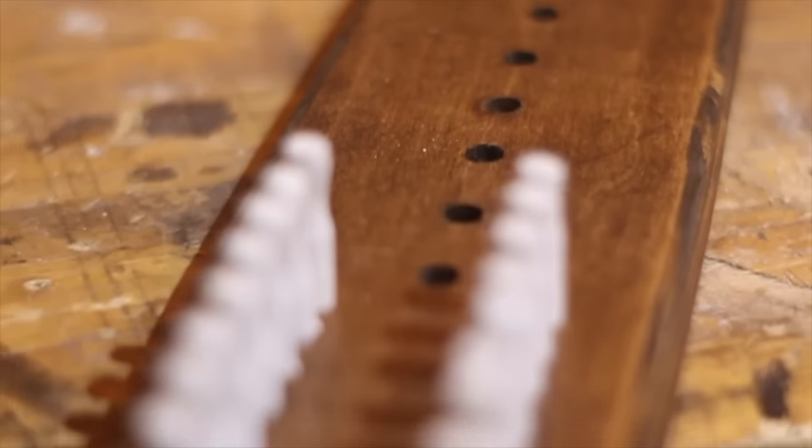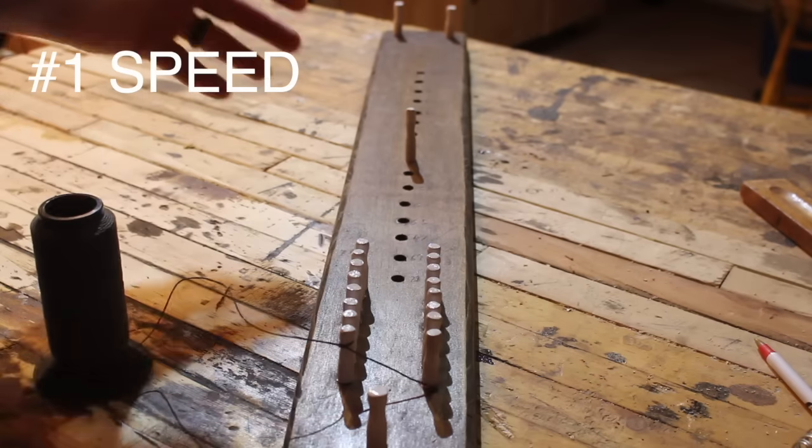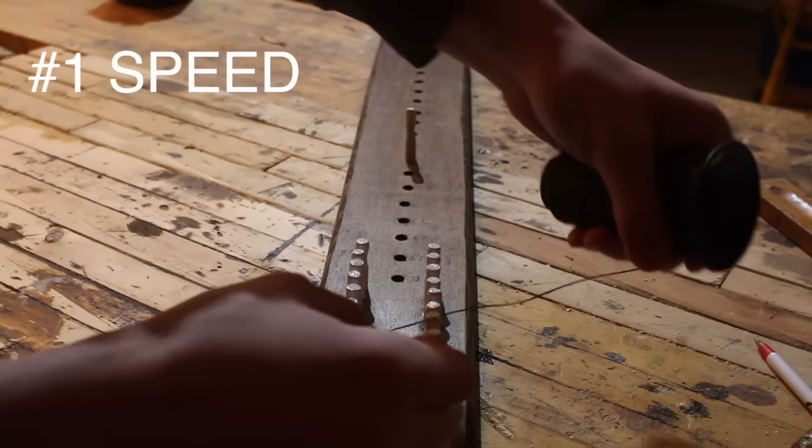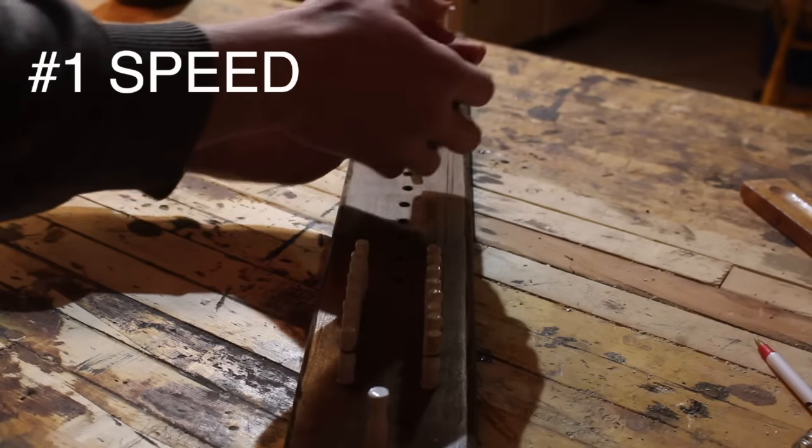There are two main reasons we use a bowstring jig. The first one is the speed. It makes it so much faster. We only have to measure once and that's when we set up the bowstring jig. The rest of the times we just move that dowel to the corresponding number and you're ready to make your bowstring.